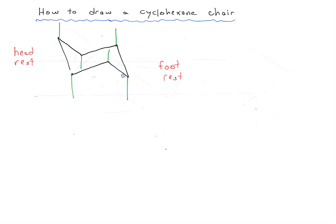The next thing to do is to draw in the equatorial groups. The reason it's best to draw equatorial in second is because if you draw it in first it's really easy to draw it off to one side, not quite right. You want to draw your equatorial groups so that your carbon looks tetrahedral, because that's what the bond angles in an sp3 hybridized carbon are — 109 degrees, tetrahedral. So if your axial group is pointing down, you want your equatorial group to point somewhat up. And as you go along the ring, if your axial is pointing up, equatorial points somewhat down. Somewhat up, somewhat down, somewhat up, somewhat down, and we've drawn all the groups of our cyclohexane chair.